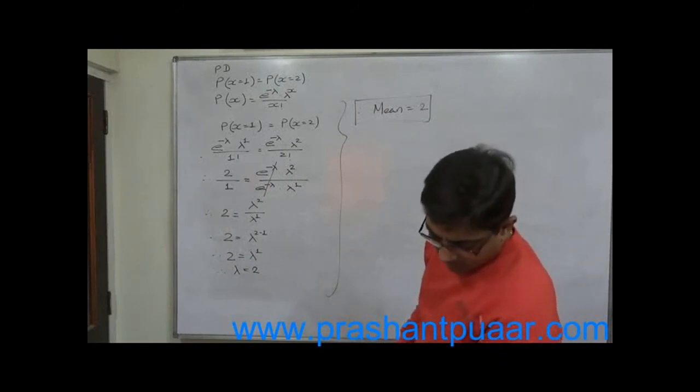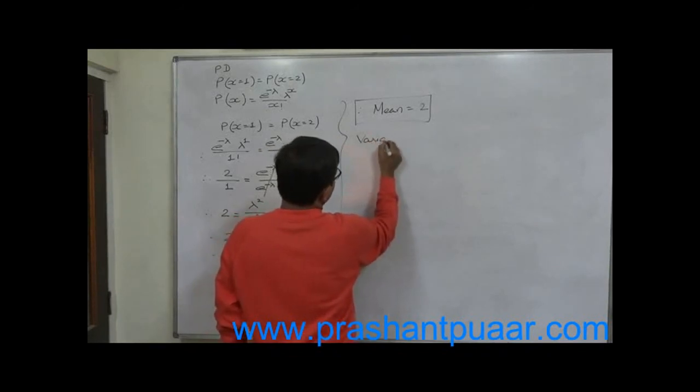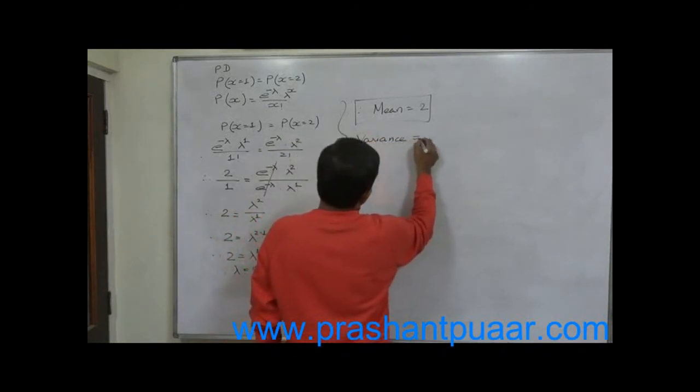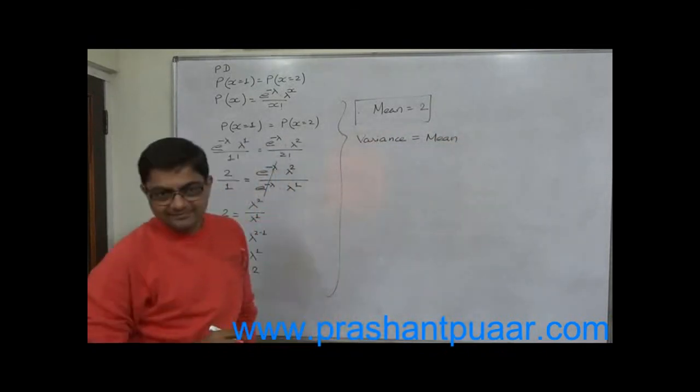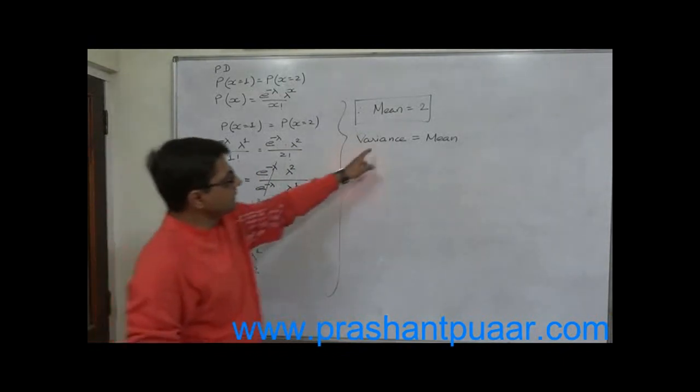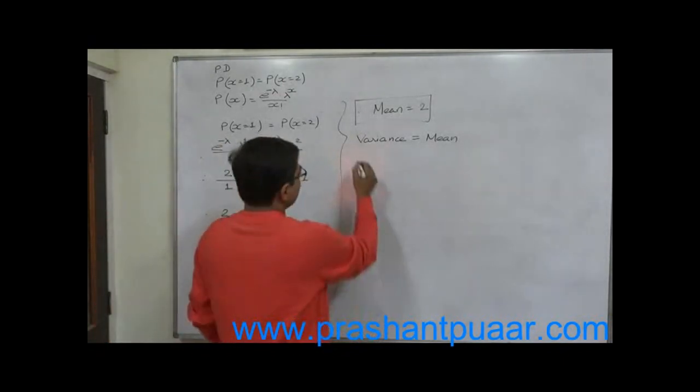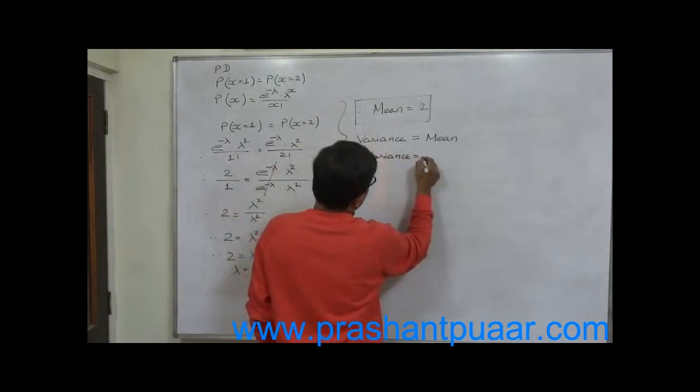Find out the mean and variance. Now what is variance? In case of Poisson distribution, variance and mean are same. If the variable follows Poisson distribution, then variance and mean are same. So in this case, variance is also 2.